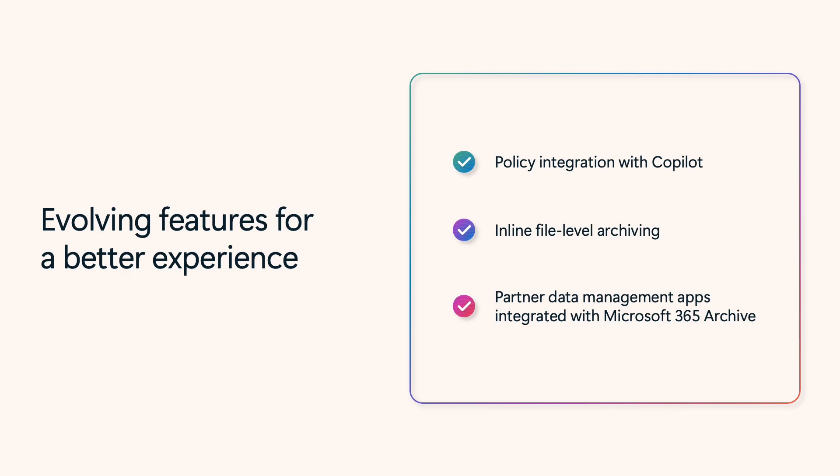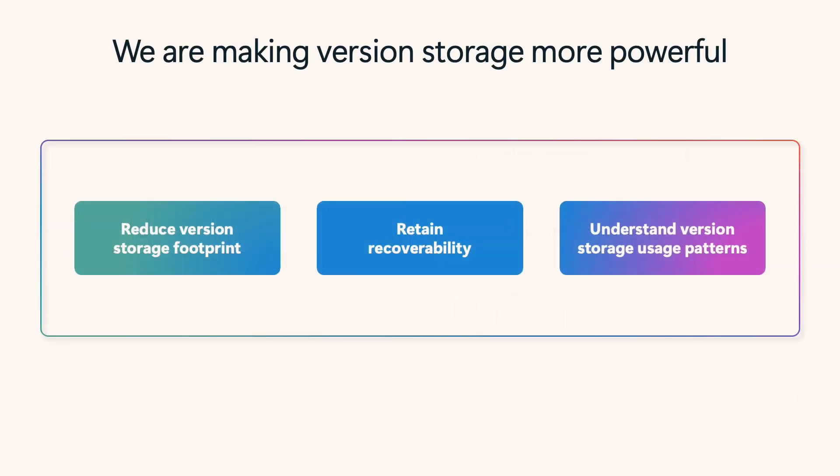And look for partner-built orchestration apps integrated with Microsoft 365 Archive. Putting inactive content on a cold tier is important, but so is removing obsolete older versions. File versioning in OneDrive and SharePoint is already powerful, and we continue to improve it to give you more control. A common challenge? Low-value versions consuming storage without enough admin controls or insights.